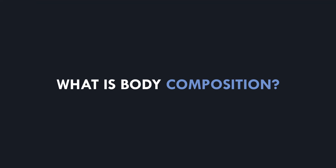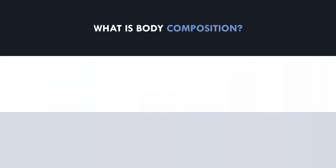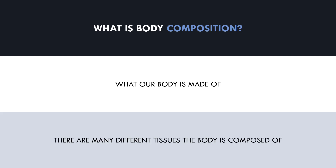Quite simply, as the name implies, body composition is basically what the body is composed of — in other words, what our body is made of. There are many different tissues that make up the human body, but we are only really concerned with a few of these in terms of physique development and athletic performance. Let's now cover what tissues make up body composition.